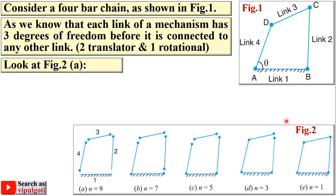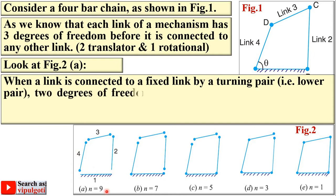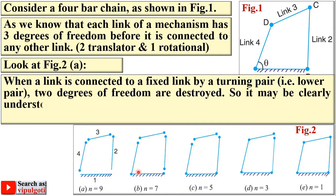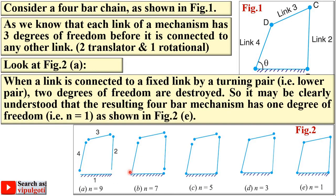Looking at figure 2a, when a link is connected to a fixed link by a turning pair, these two links are connected by a turning pair, and two degrees of freedom are destroyed. Initially there are nine degrees of freedom; after one turning pair connection, two degrees of freedom are destroyed, leaving seven degrees of freedom.